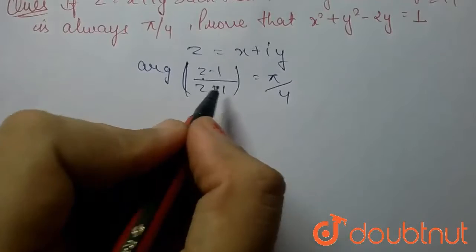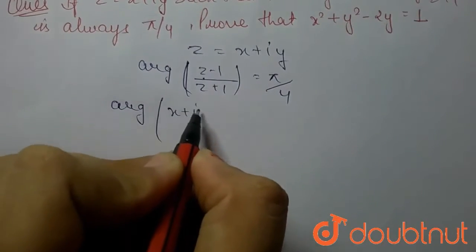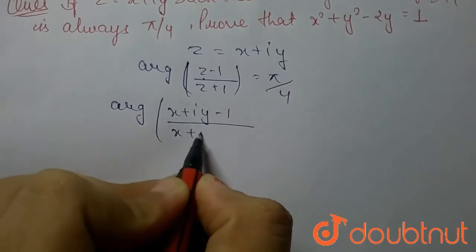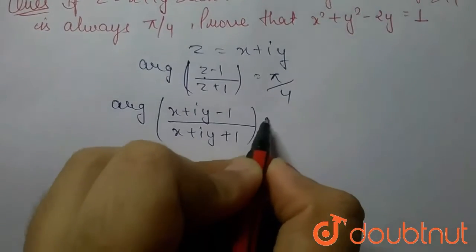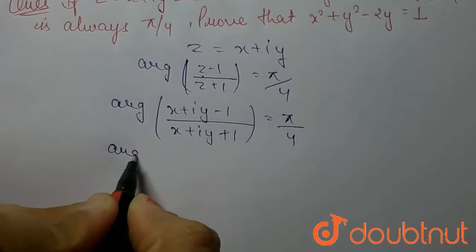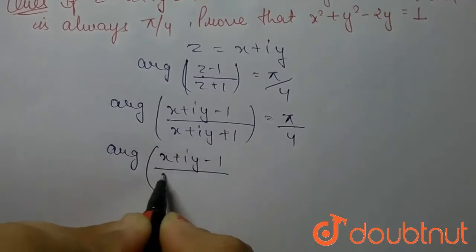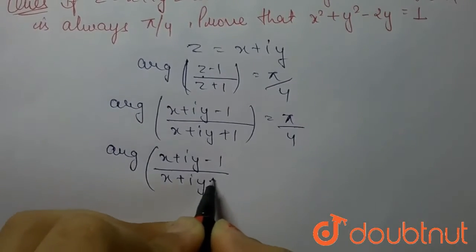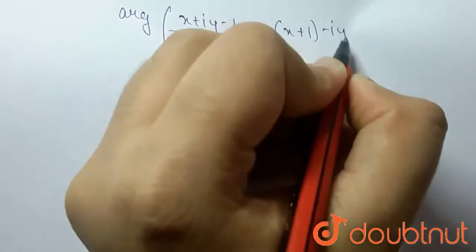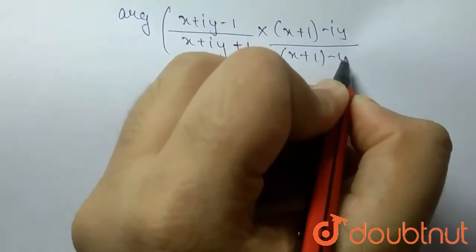The value of z is x plus iy, and it is given that argument of (z - 1)/(z + 1) equals π/4. We substitute z = x + iy and rationalize by multiplying numerator and denominator by the conjugate (x + 1 - iy).